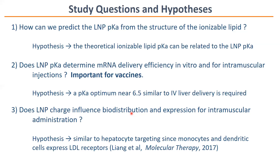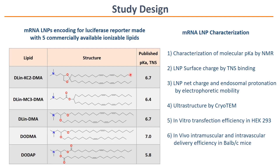In this study we asked whether we could predict the pKa of the LNP from the structure of the lipid, whether the pKa behaves at an intramuscular site similarly to hepatocyte for endosomal release — if it should be around 6.5 for the LNP — and whether there was a charge-mediated biodistribution in intramuscular delivery like there is in intravascular delivery. To address these questions, we picked five commercially available ionizable lipids: MC3 and its precursors more or less, with TNS pKa values ranging from 5.8 all the way up to 7.